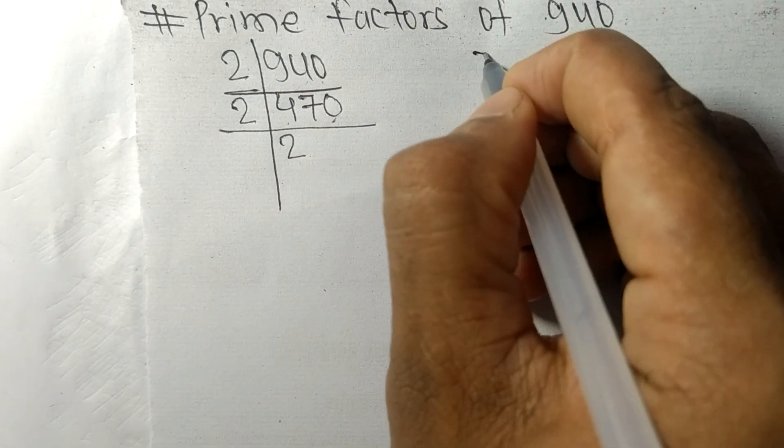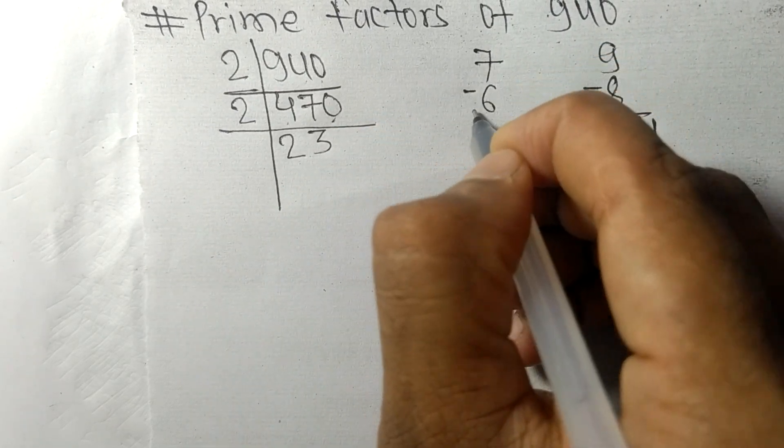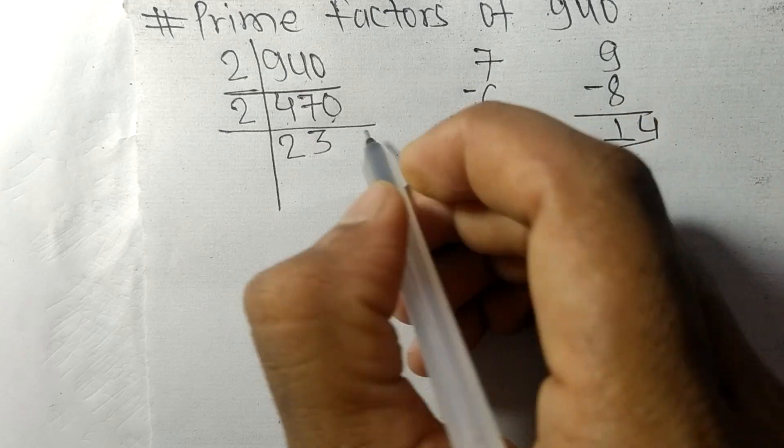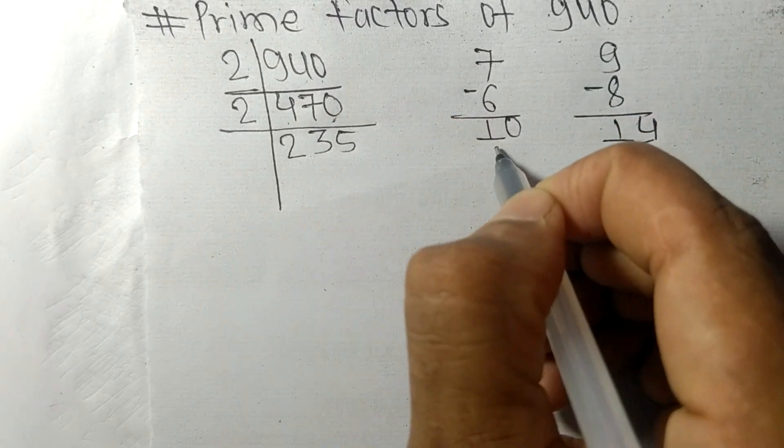2 times 2 means 4. So now we have 7. So 2 times 3 means 6. On subtracting we get 1, this 0, 10. 2 times 5 means 10.